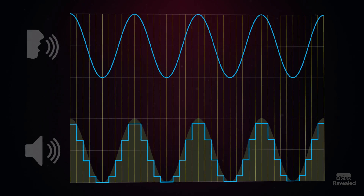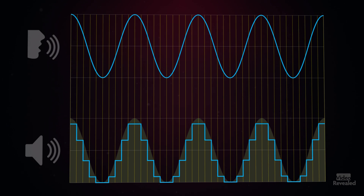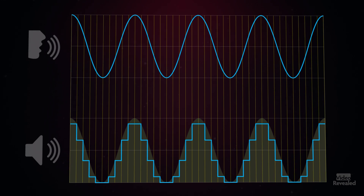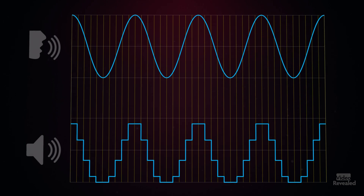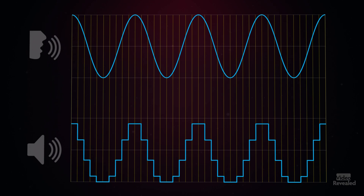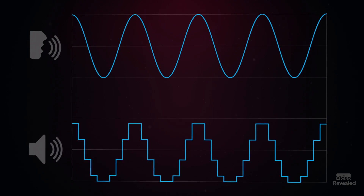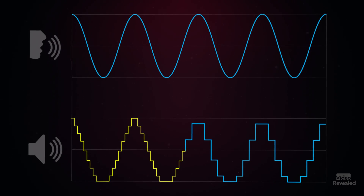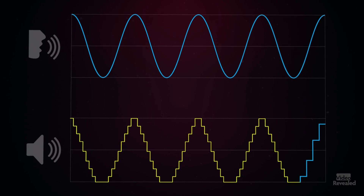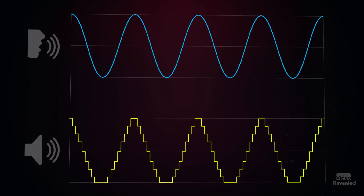Something originally that was very fluid, smooth, natural, and analog ends up being very digital — sometimes harsh and even robotic. It doesn't sound natural at all. The good thing is that if you record with a higher bit depth, you're going to increase the overall fidelity and quality of that audio. A higher bit depth is definitely going to make that audio sound better.